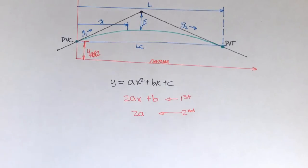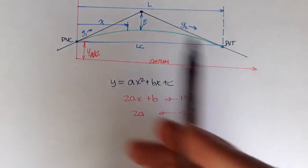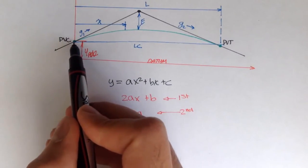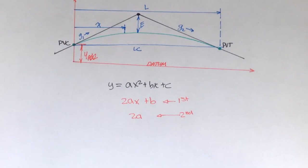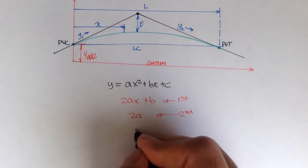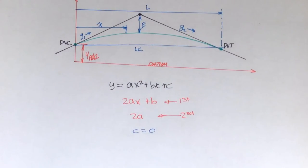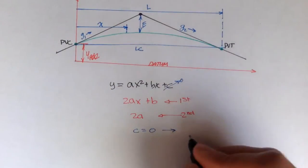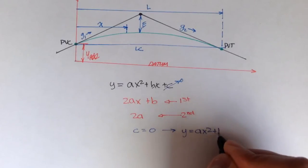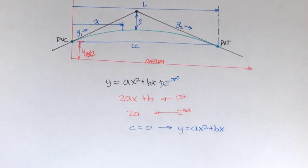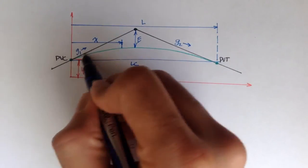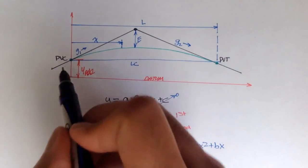But why is this important? Well, if we place the origin of this vertical curve at PVC — the beginning of vertical curvature — then C would equal 0. So the general equation of a parabola becomes Y equals AX squared plus BX. And at the origin of this curve, isn't the slope at that point equal to the grade?